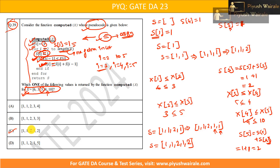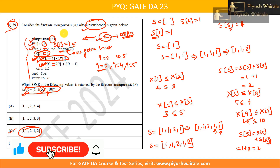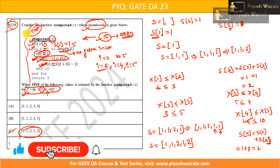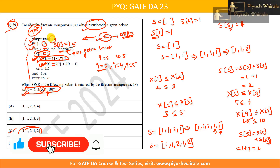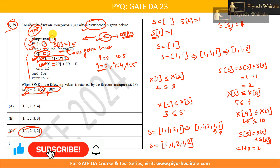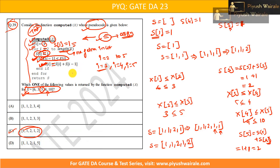That is basically option C, so option C is correct. In this way, you need to trace through the pseudo code. If you understand how if blocks and for loops work, that's it — that is all being tested in this question. I will try to add this type of question in the test series so you can practice. If you want me to continue this series of previous year GATE DA solutions, please hit the like button and subscribe to my YouTube channel. That's it from this video. Thank you.